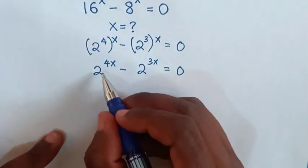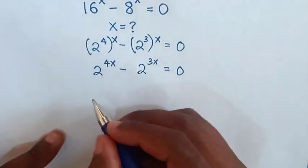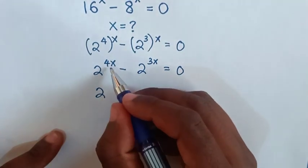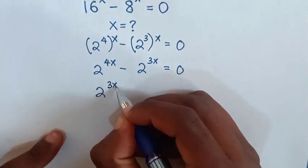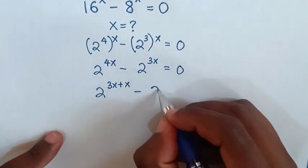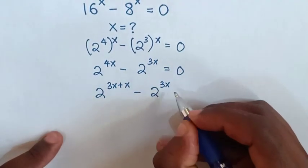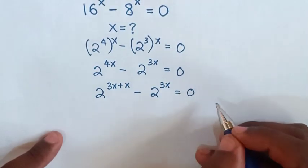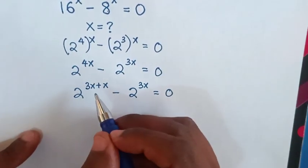Then next step, for this exponent to be like this one here, it will be 2^4x is same as 2^(3x+x) minus this 2^3x which is equal to 0.